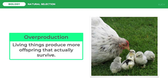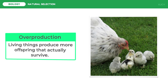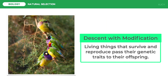Another important principle of natural selection is descent with modification. This refers to living things that survive and reproduce passing their genetic traits to their offspring. With this principle, Darwin was able to explain the unity of life. Organisms share many genetic characteristics because of the descent of all organisms from a common ancestor, which is believed to have had several adaptations or modifications due to the environment, allowing the ancestral species to be suited to specific ways of life.